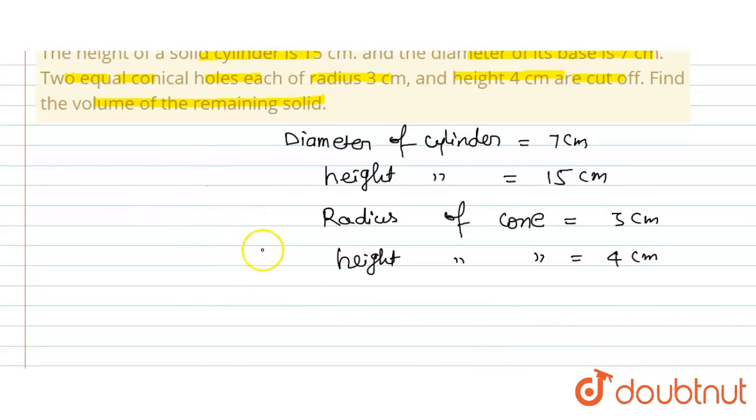volume of remaining solid. So how can we find this remaining volume of solid? The volume of remaining solid will be equal to volume of cylinder minus we will subtract two